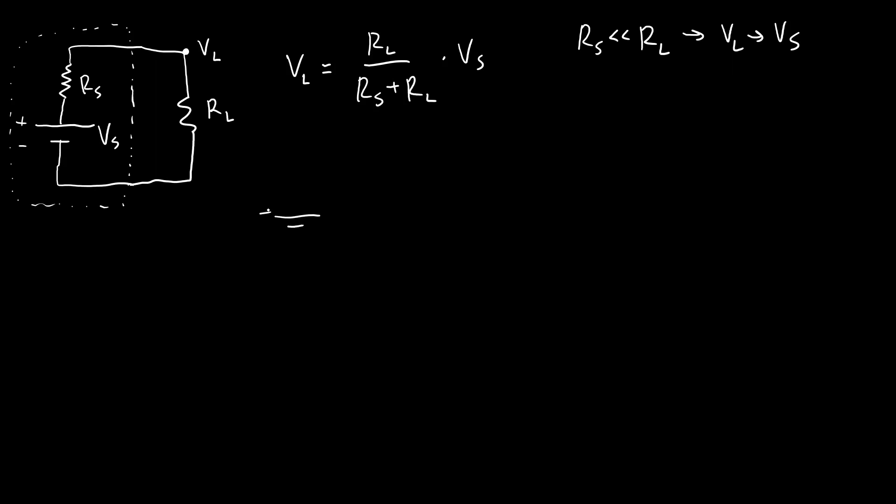This also solves our problem about getting infinite current. If I take my realistic battery model which has that internal resistance VS and I short-circuit it, now I have some non-zero resistance in the way. By Ohm's law, VS equals I times RS. My maximum current that I can get if I just short-circuit this battery to itself with no external load is going to be VS over RS. So my maximum current is limited by that internal resistance - I don't get infinite current.